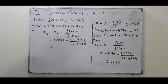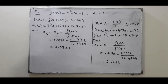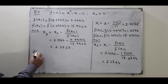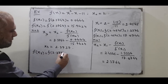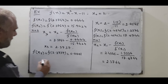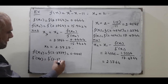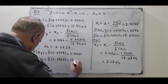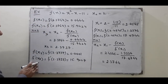Substituting x₂ = 2.3764, f(x₂) = 0.0444, and f′(x₂) = 15.9424, and simplifying gives x₃ = 2.3737. This is the output for iteration number three. To go ahead, we calculate f(x₃) = f(2.3737) = 0.0001, and the derivative f′(x₃) = f′(2.3737) = 15.9027.